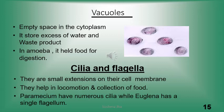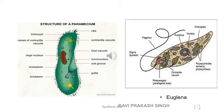Another organelle is cilia and flagella — small hair-like extensions present on the cell membrane that help in locomotion and collection of food. Many organisms like paramecium have millions of cilia, while euglena has only a single flagellum. Paramecium is a slipper-shaped, single-celled animal. You can see the hairy projections known as cilia in paramecium and the single flagellum in euglena.